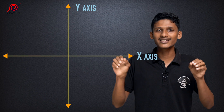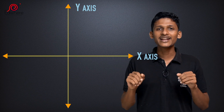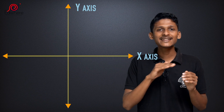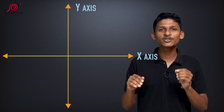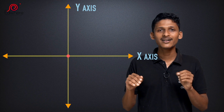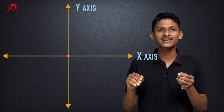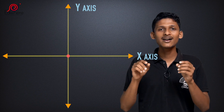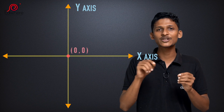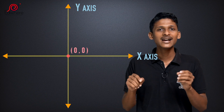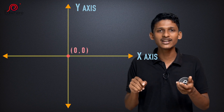Now, let's try this. There is a point here. What is the point here? We will call that point the origin. It is the origin.